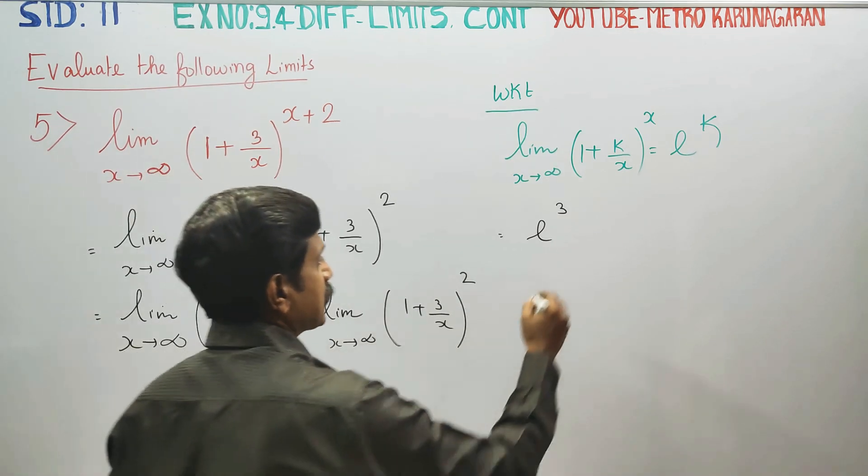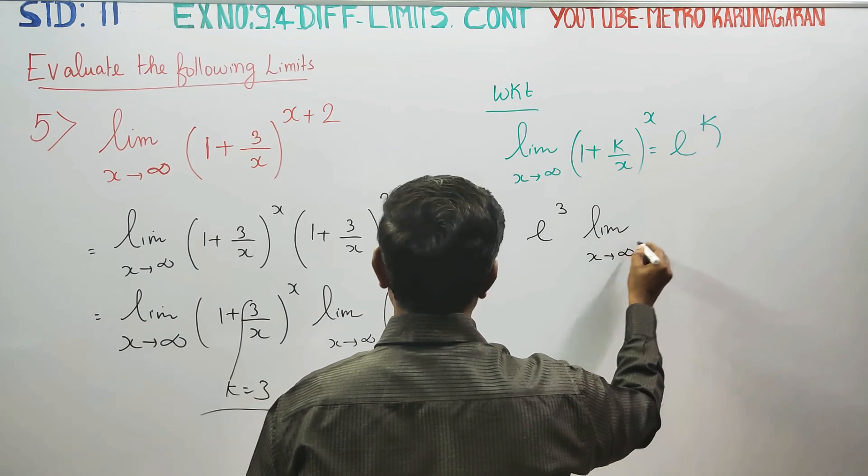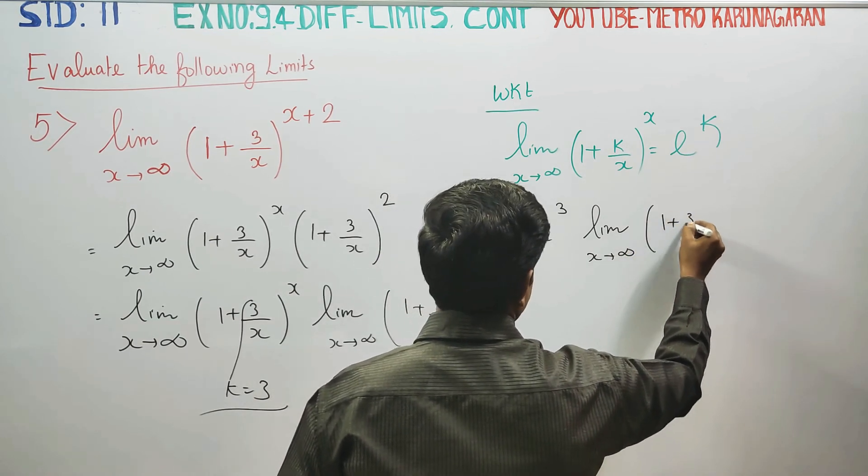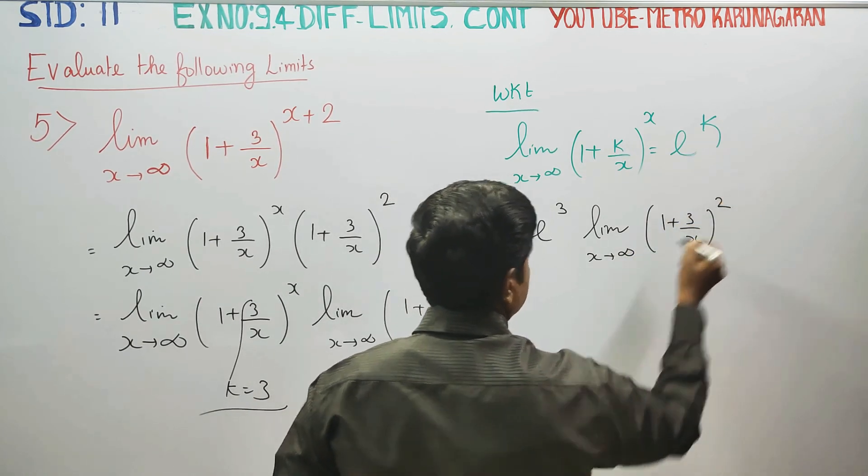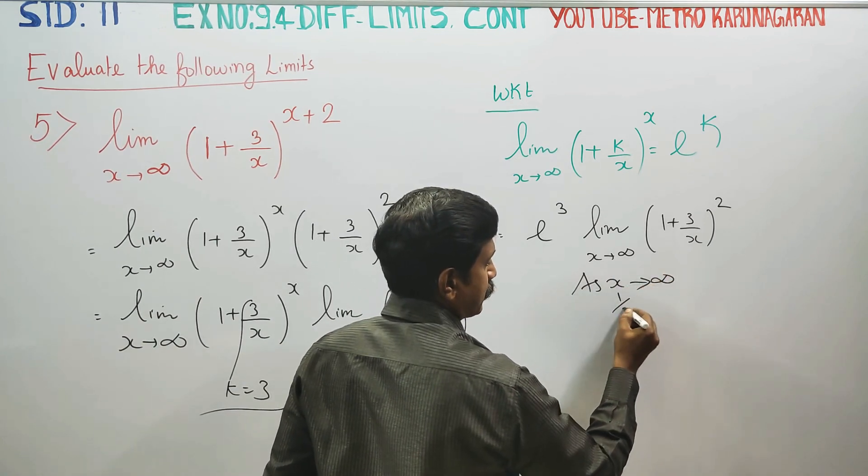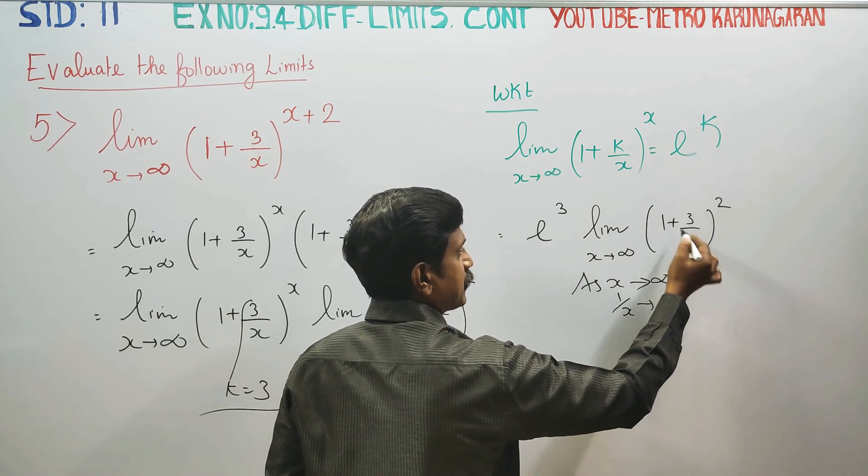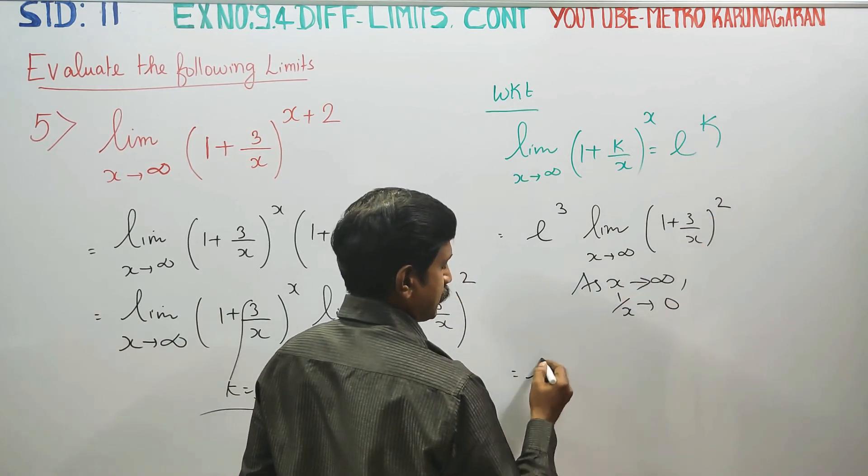Applying this formula with k = 3: limit as x turns to infinity of (1 + 3/x)^x. As x turns to infinity, 1/x approaches 0, giving us e^3.